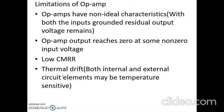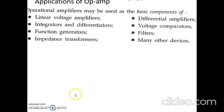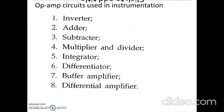Op amps undergo thermal drift, meaning both internal and external circuit elements may be temperature sensitive. Operational amplifiers are used as basic components in linear voltage amplifiers, differential amplifiers, integrators, differentiators, voltage comparators, function generators, filters, impedance transformers, and op amp circuits used in instrumentation systems as inverters, adders, subtractors, multipliers, dividers, buffer amplifiers, and differential amplifiers.